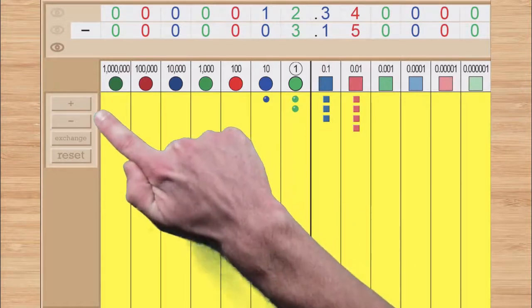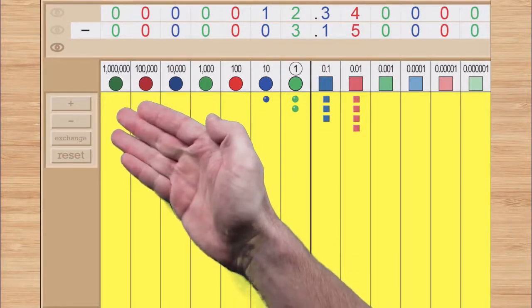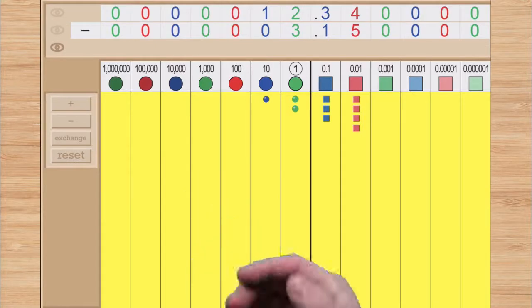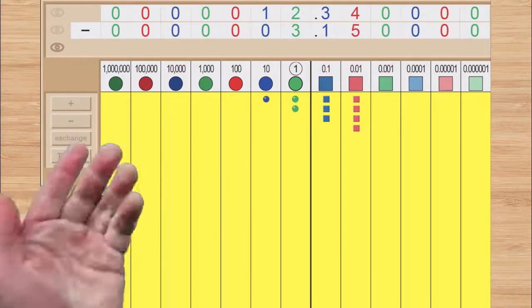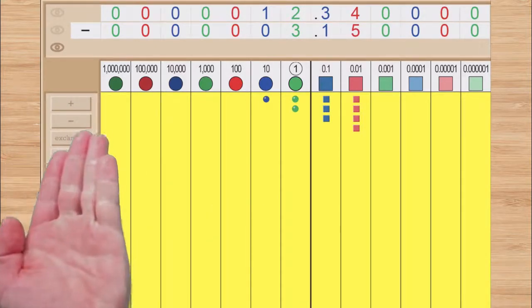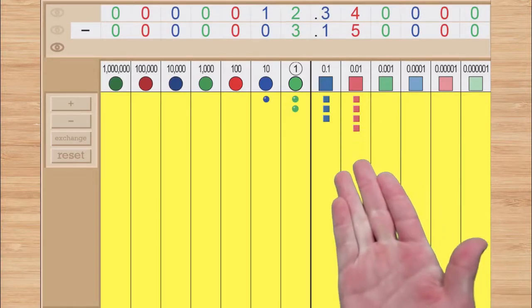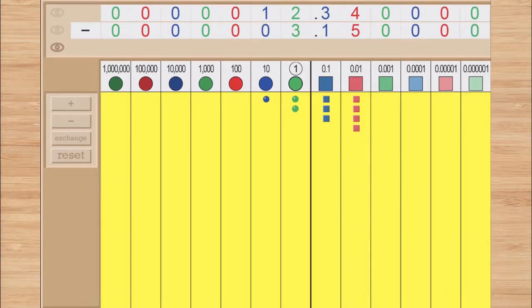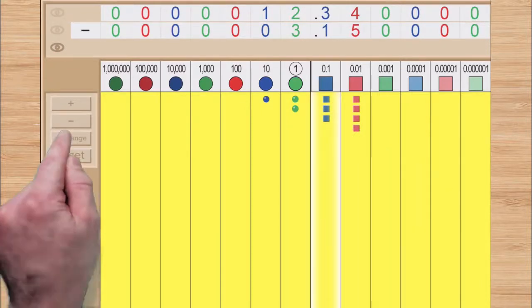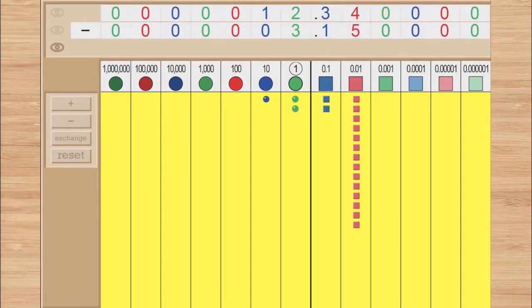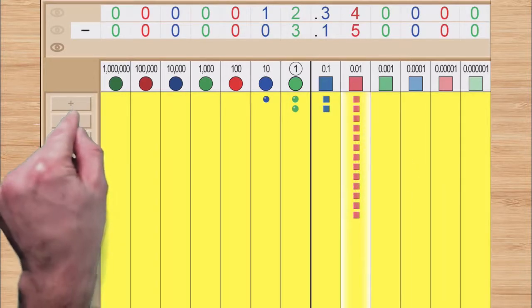Again, we can use the add-a-bead and take-a-bead buttons to manually perform the operation, and the exchange button for any borrowing that will be needed. Starting at the smallest category, we already need to do an exchange. A simple tap on the column we want to exchange from, and a tap on the exchange button will give us what we need. Then we can use the take-a-bead button to subtract.